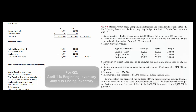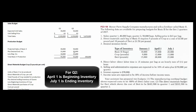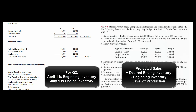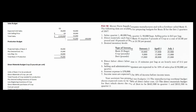For quarter two, we project sales of 50,000 units, we want 20,000 at the end, but we don't have to make the ones already in beginning inventory — that's the 15,000 units. So our total production for the first half of the year is 100,000 units: 45,000 units in quarter one and 55,000 units in quarter two.